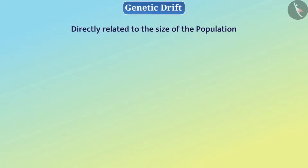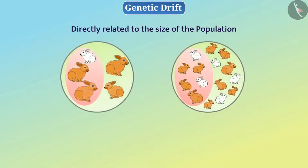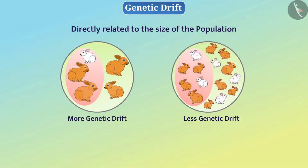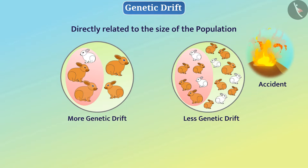Genetic drift is directly related to the size of the population. If the size of the population is small, then the genetic drift will be more. Therefore, the number of organisms must be very large in the population, such that there will be more chances of survival from a sudden accident, and thus there will not be much effect on the frequency of the genes, i.e., there will be no genetic drift.